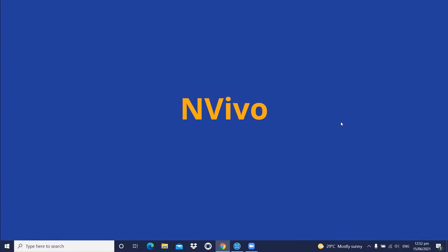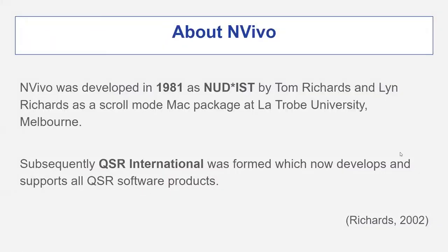We will now move to the NVivo part. NVivo was developed in 1981 as NUDIST by Tom Richards and Lynn Richards as a scroll-mode Mac package at La Trobe University in Melbourne. Tom Richards helped Lynn, his wife, to build this software for her work as a sociologist. Subsequently in 2001, QSR International was formed from the original NUDIST, and now they develop and support all QSR software products.